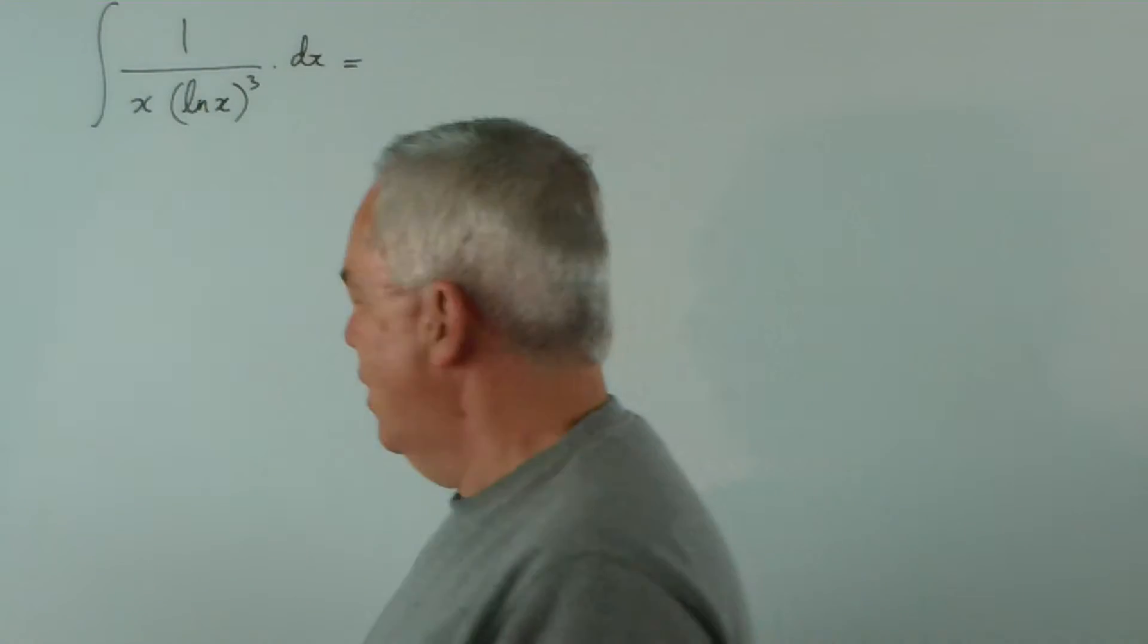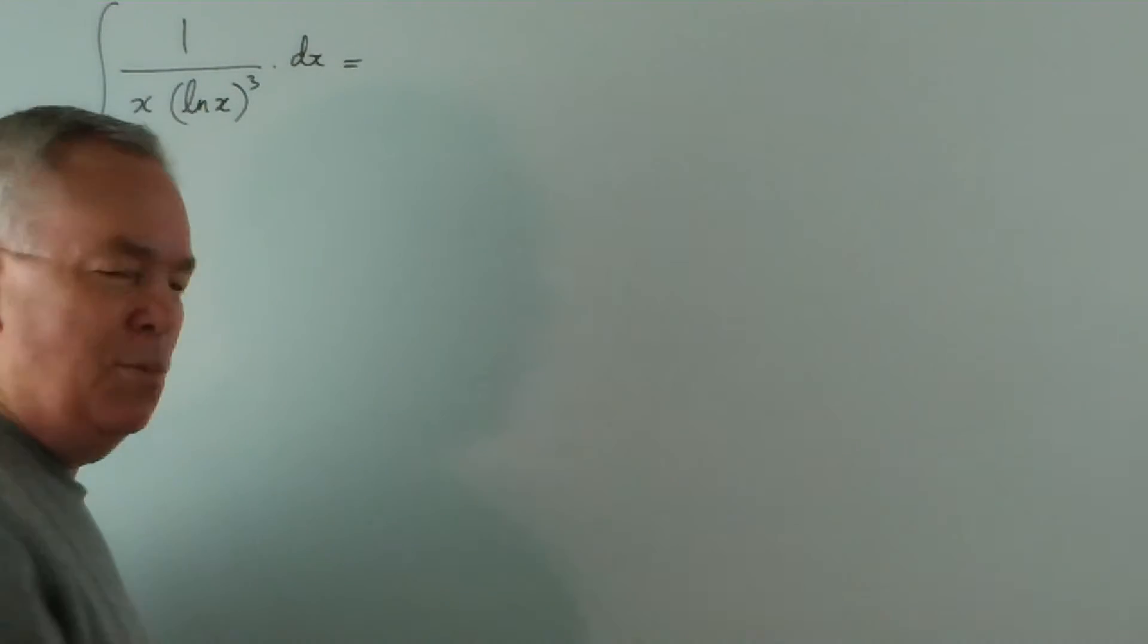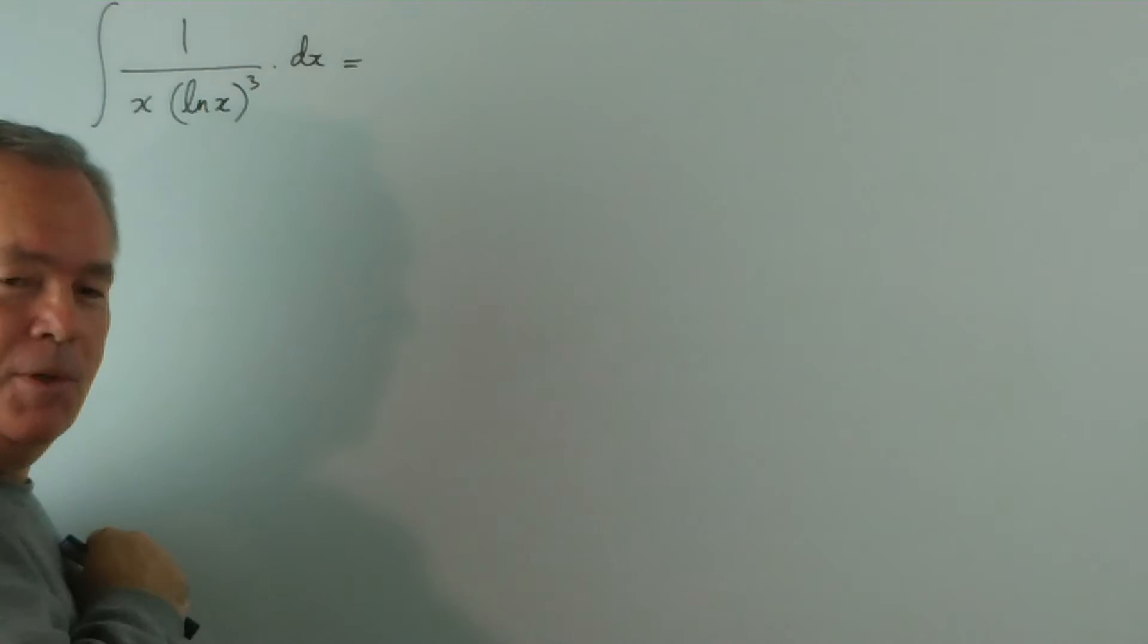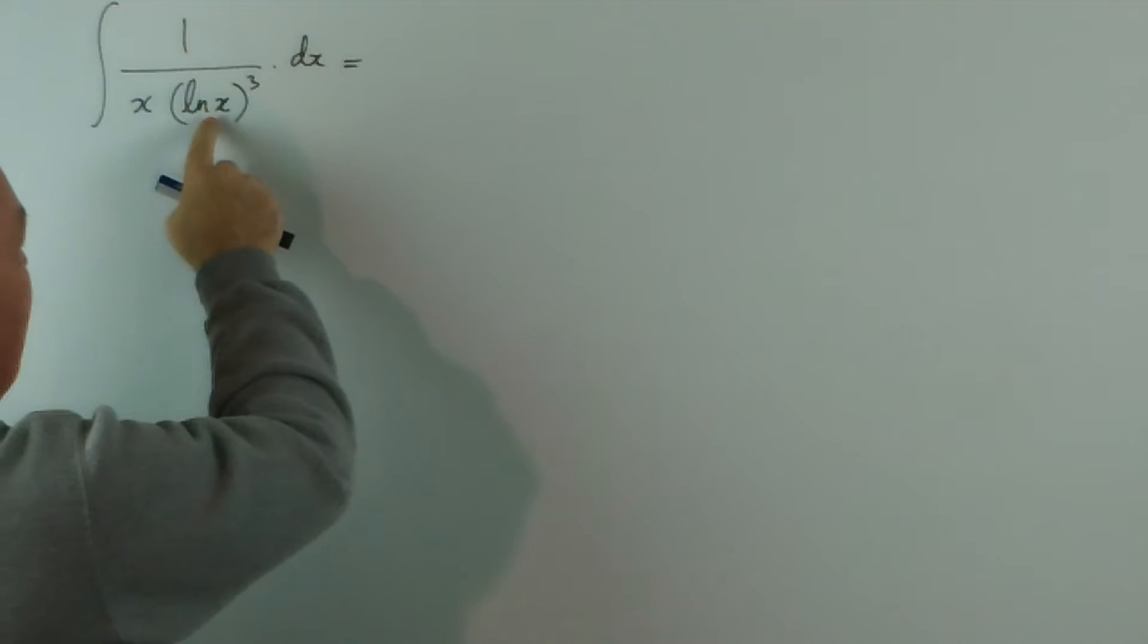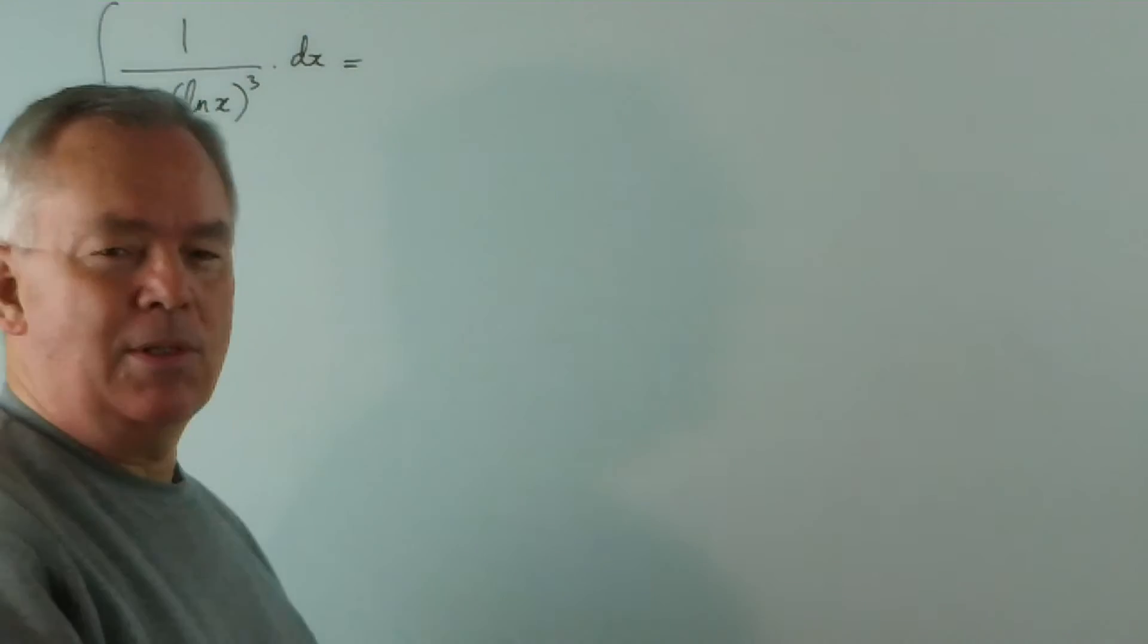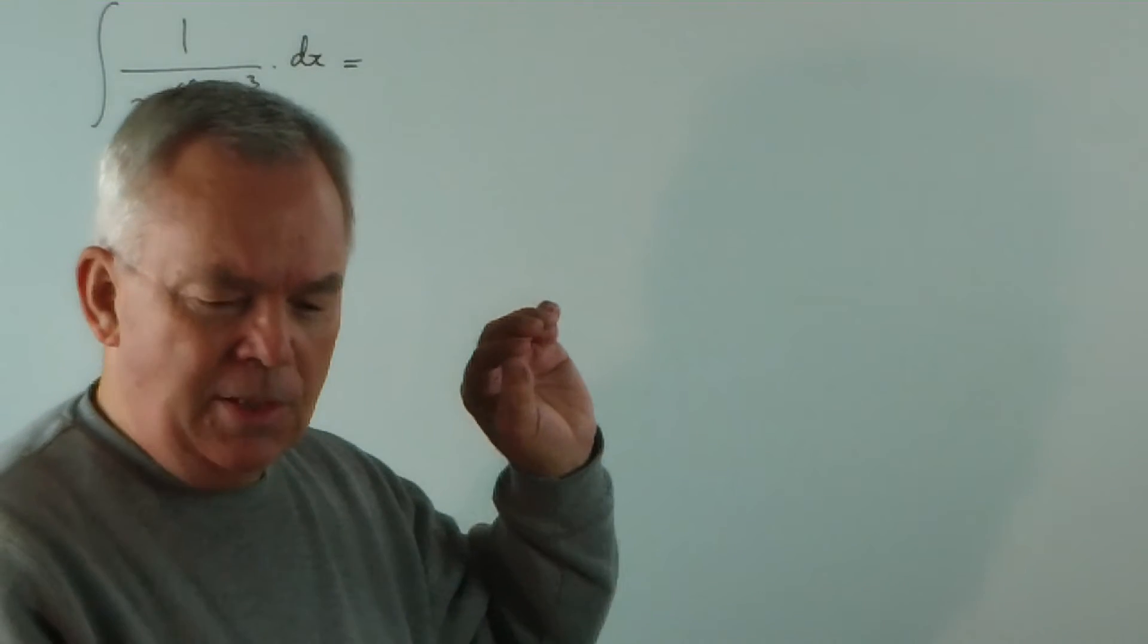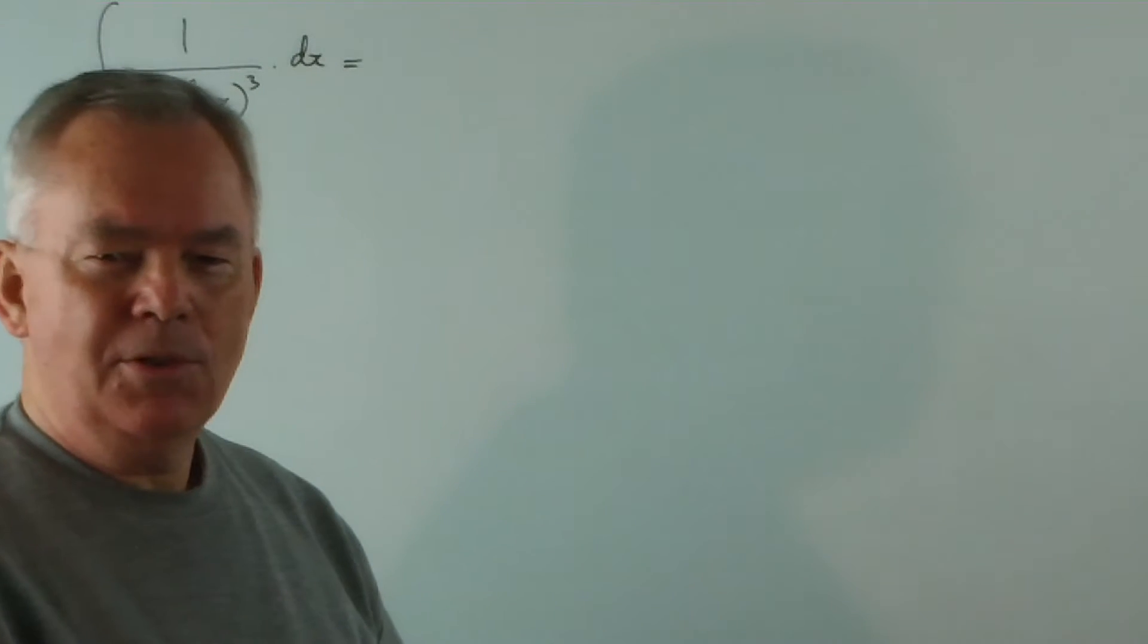An interesting one. It looks more frightening than it really is because, hopefully, one of the first things you notice about it is the derivative of the logarithm of x is, in fact, 1 over x. So we have this nice little pattern here. And obviously, this is beautifully set up for the substitution method.